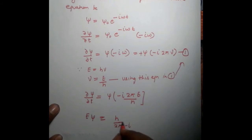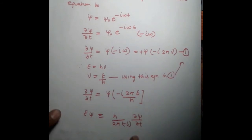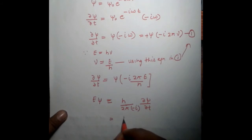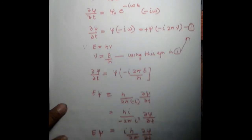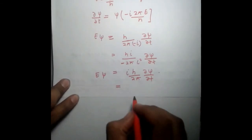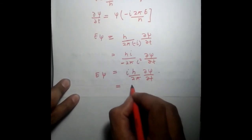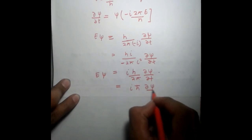This is i in the denominator ∂ψ/∂t. Multiplying by i on denominator as well as numerator, this i² is -1, this cancels out as plus. This implies ih/(2π) ∂ψ/∂t equals Eψ. Or we can write it as iℏ ∂ψ/∂t equals Eψ.